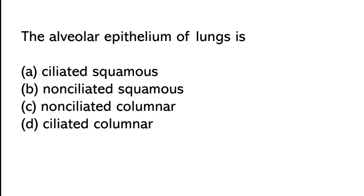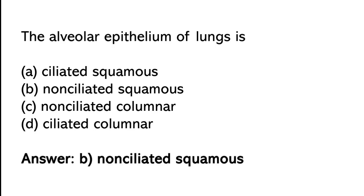The alveolar epithelium of the lungs is — ciliated squamous, non-ciliated squamous, non-ciliated columnar, ciliated columnar. The correct answer is option B. The alveolar epithelium of the lungs is non-ciliated squamous.